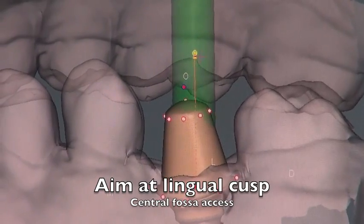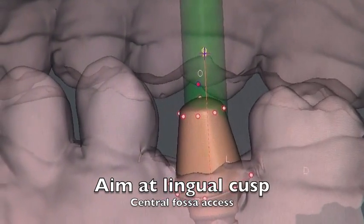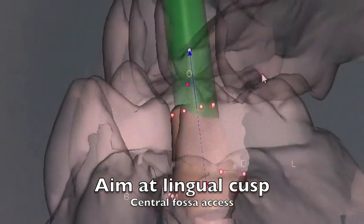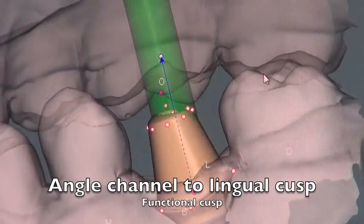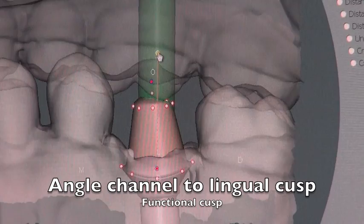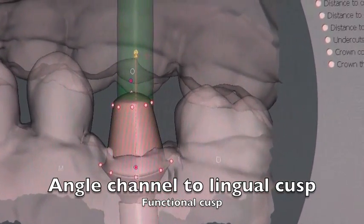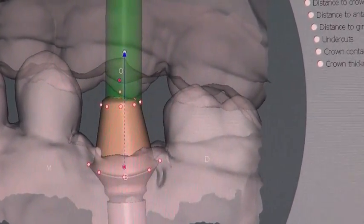We're going to do the CAD portion, so we take the channel. Now we're able to point this right at the cusp we want it to—so the lingual cusp of the upper molar, which is the functional cusp. We want this channel to go right at that cusp. That would be the ideal position for the cusp and for the channel to meet.